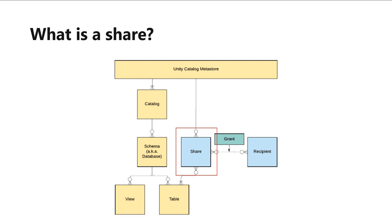So what is a share? In data sharing, a share is a read-only collection of tables and table partitions to be shared with one or more recipients. If your recipient uses a Unity Catalog-enabled Databricks workspace, you can also include notebook files in a share. A share is a securable object registered in Unity Catalog. A share can contain tables and notebook files from a single Unity Catalog metastore. You can add or remove tables and notebook files from a share at any time, and you can assign or revoke data recipient access to a share at any time.